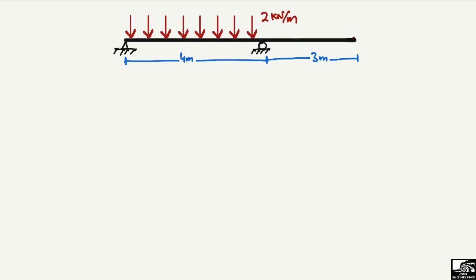For this overhanging beam, a uniformly distributed load of 2 kN per meter is acting only on the 4 meter length of the beam. The overhanging portion, which is 3 meters, has no load.